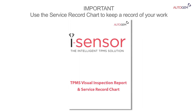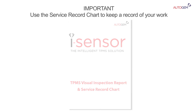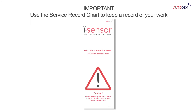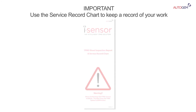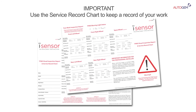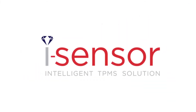Don't forget to complete the handy service record chart found in each iSensor box. Not only does this allow you to keep a record of the TPMS work performed, ensuring duplication has been performed correctly, it also acts as a reminder for your TPMS audit and includes some helpful expert tips. iSensor, the intelligent TPMS solution.